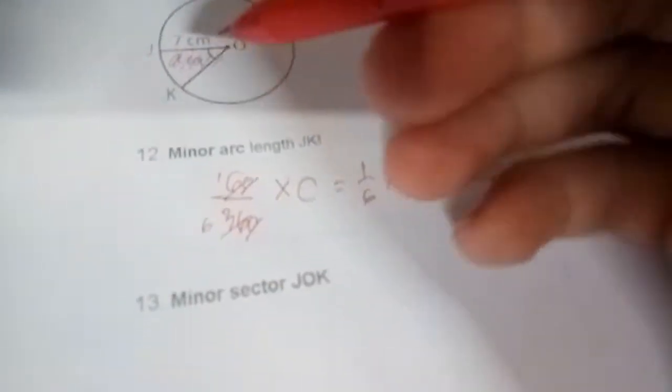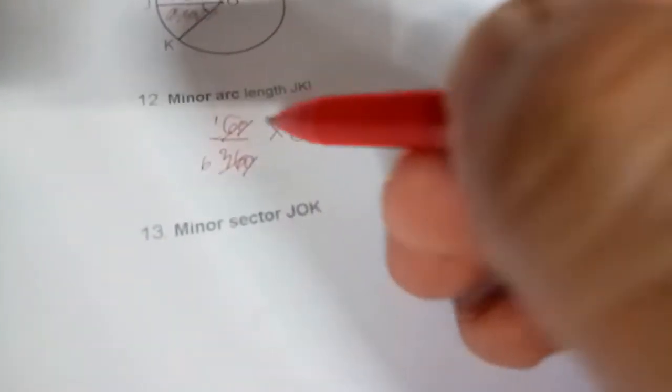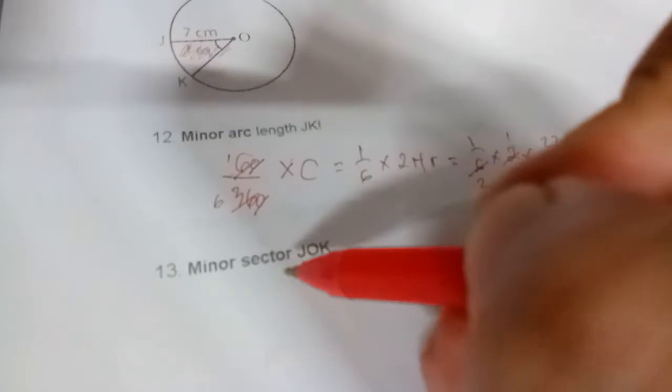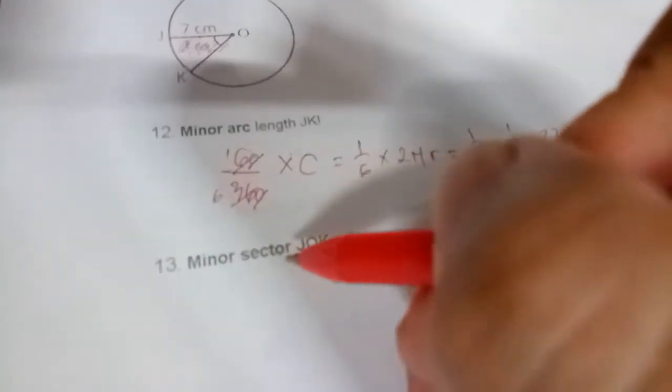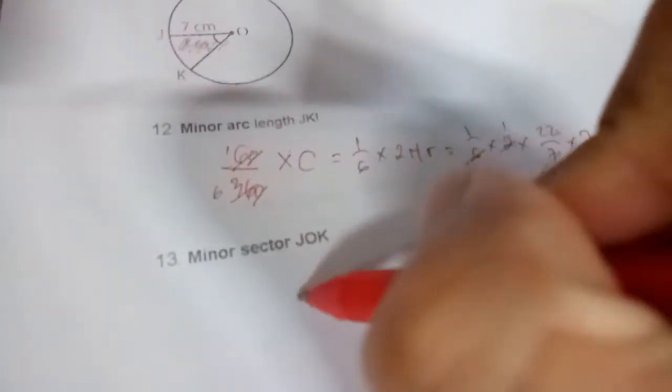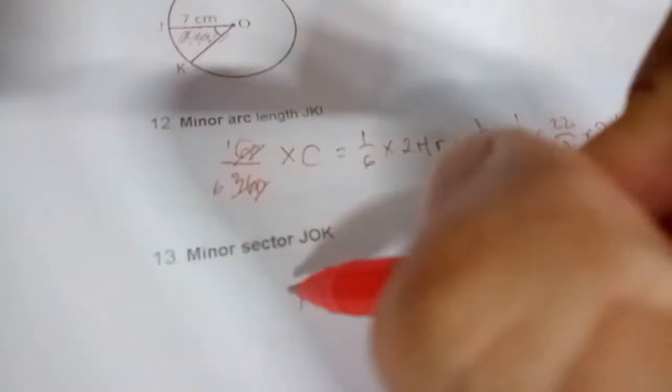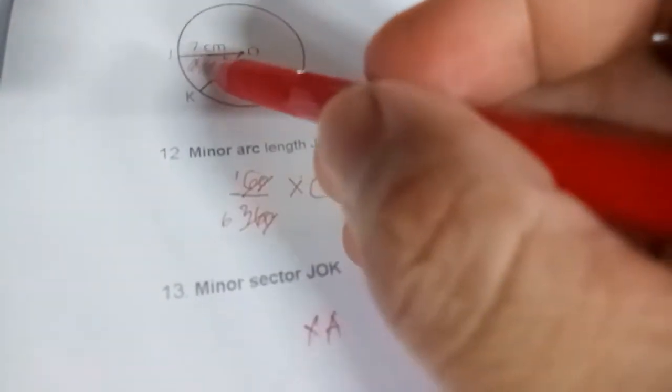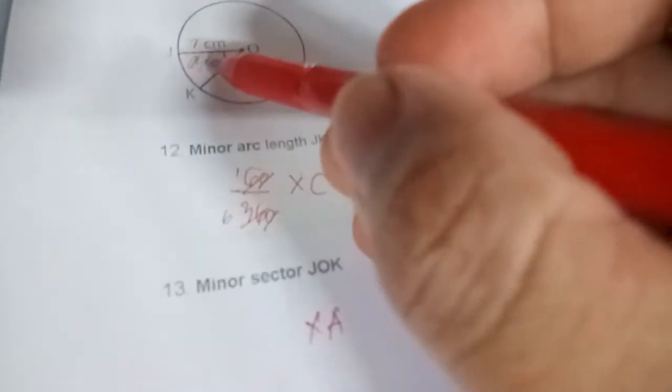The concept is still the same. Previously when you calculate an arc, you multiply it with the circumference because the arc is part of the circumference. But in this case, the sector is a part of the area, so you do the same thing but this time you multiply with the area. The angle we want to use is 60 over 360.